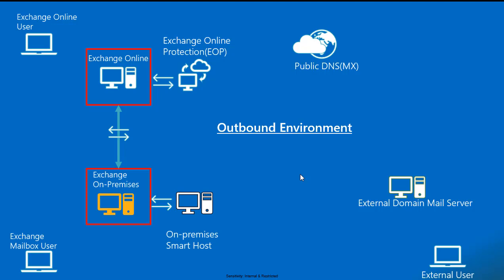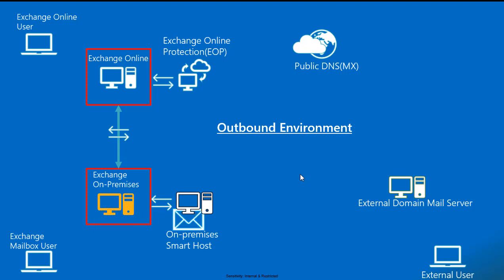Let's talk about outbound mail flow. When an on-premises user sends mail to an external user, the on-premises user composes the mail and sends it to the on-premises transport server. The on-premises transport server then uses a connector to send the mail to the Edge server or smart host.